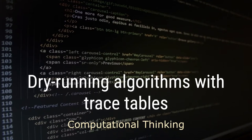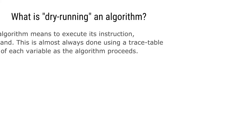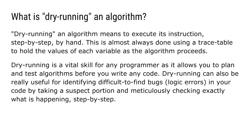Hi and welcome to this video where I'm going to be showing you how to dry run an algorithm using a trace table. Dry running an algorithm means to execute its instructions step by step by hand. This is almost always done using a trace table to hold the values of each variable as the algorithm proceeds. Dry running is a vital skill for any programmer as it allows you to plan and test algorithms before you write any code.